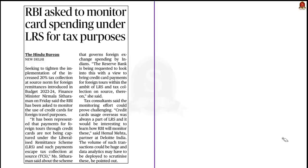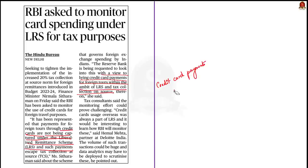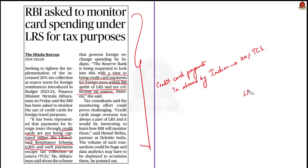Our finance minister mentioned that earlier, credit card payments made by an Indian in a foreign country were not under LRS, so these payments were not taxed. But now, the finance minister has asked the RBI to monitor the use of credit cards for foreign travel purposes. From here on, credit card payments made by an Indian while on foreign tours will also be brought under LRS and will attract a TCS of 20%. The minister also asked the RBI to tighten implementation of the tax hike raised from 5% to 20%. In this discussion, we understood the Liberalized Remittance Scheme and its significance.